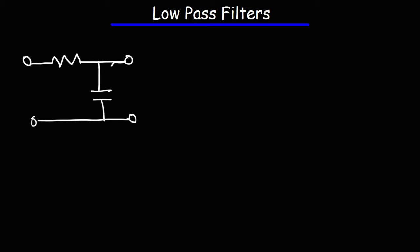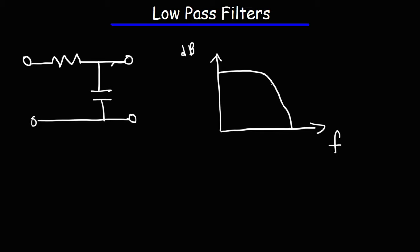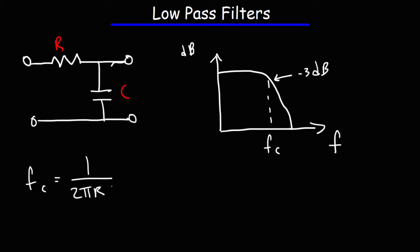For the RC low-pass filter, this circuit has a frequency response where we have frequency on the x-axis and decibels on the y-axis. This would be the cutoff frequency FC. At the cutoff frequency, the signal drops by 3 decibels from its maximum. To calculate the cutoff frequency, you use the formula 1 over 2πRC. As you increase the capacitance or the resistance, the cutoff frequency decreases.